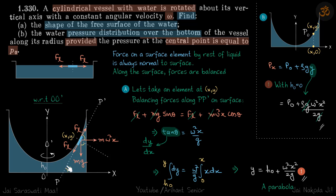Balancing forces along PP' on the surface element at (x, y): forces in one direction are FL + mg sin θ, and in the other direction FL + mω²x cos θ. Setting these equal and simplifying, we get tan θ = ω²x / g. Since the tangent to the surface makes angle θ with the x-axis, tan θ = dy/dx.